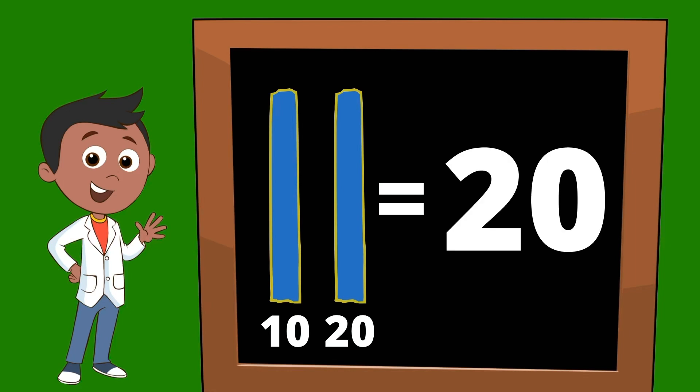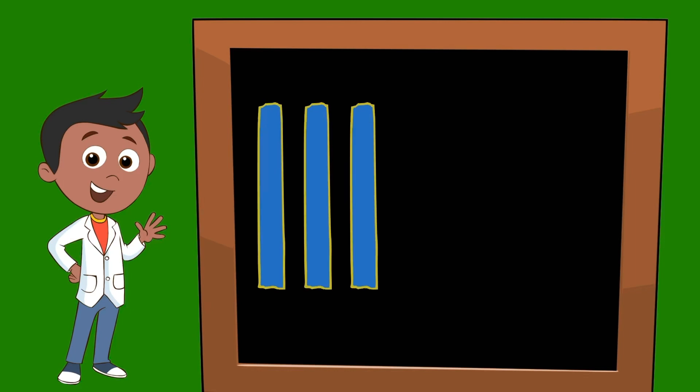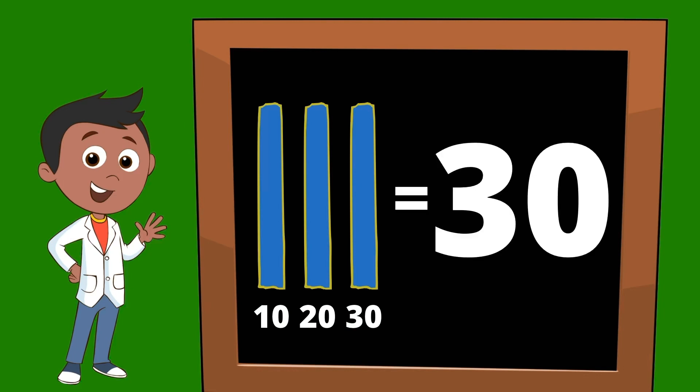If we add one more, we would have three ten sticks. We would start with our first one, which would be ten. Our second stick would make twenty. Our third ten stick would be thirty. Ten, twenty, thirty. Three ten sticks is equal to thirty.